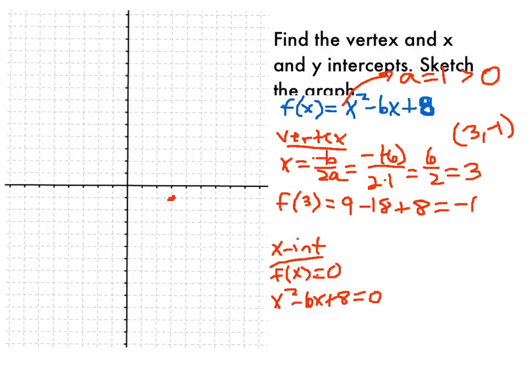So in order to do this, we could use the quadratic formula, we could complete the square, but I think it's going to be easier to factor this to be x minus 2, x minus 4, equal to 0, and that gives me x equal to 2 and x equal to 4.